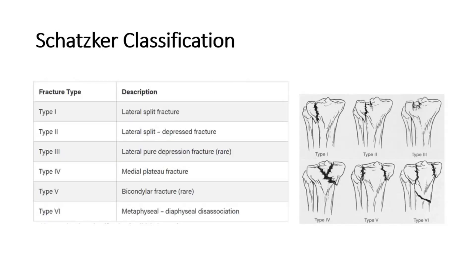Tibial plateau fractures can be classified through the Schatzker classification. There are six types: Type 1, lateral split fracture; Type 2, lateral split and depressed fracture; Type 3, lateral pure depression fracture; Type 4, medial plateau fracture; Type 5, bicondylar fracture; Type 6, metaphysial-diaphysial disassociation.